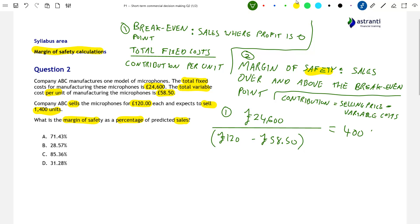So £24,600 divided by £120 minus £58.50 is equal to 400, specifically 400 units that company ABC needs to sell in order to break even. 400 microphones. So this is the company's break even point and the answer to step one of our calculations.